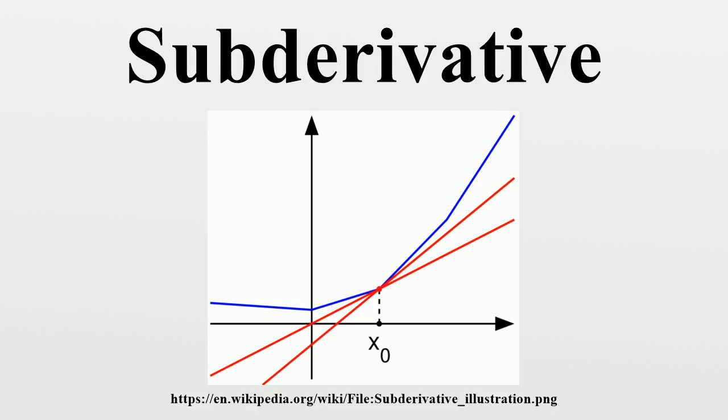Let F:I→R be a real-valued convex function defined on an open interval of the real line. Such a function need not be differentiable at all points. For example, the absolute value function F(x)=|x| is non-differentiable when x equals zero.